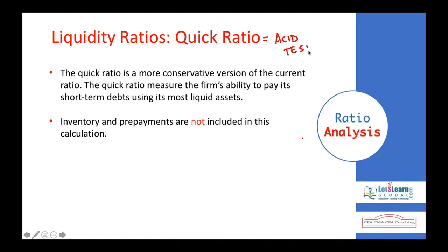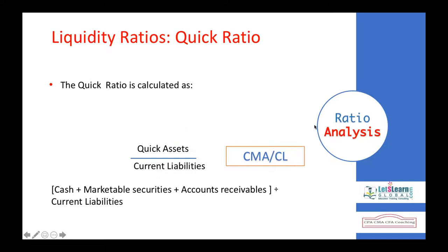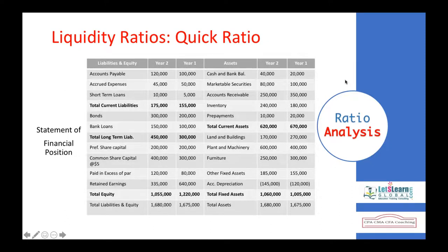Can we say that a 3.54:1 current ratio guarantees we can pay current liabilities? No, we cannot give a guarantee. Because you might have most of your current assets in inventories, which take a long time to convert back into cash — but your current liabilities are becoming due today, tomorrow, the day after. Where is the money? Prepayments can never be expected to pay current obligations; they are just paid in advance for the future. So we want a more conservative form of liquidity.